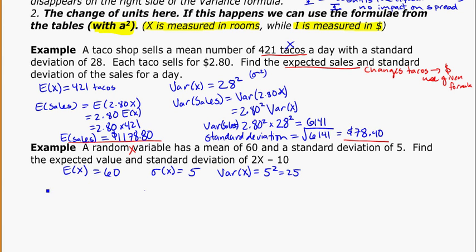So if I want to find this, the expected value of 2x minus 10, that's going to be the same as saying 2 times the expected value of x minus 10. Which is 2 times 60 minus 10, which is equal to 110.